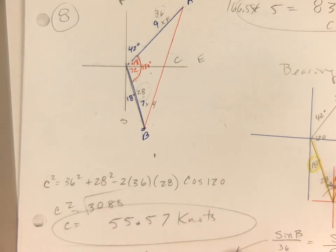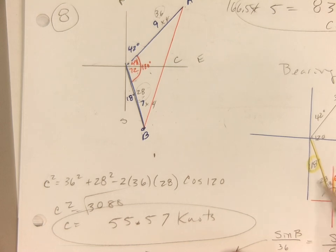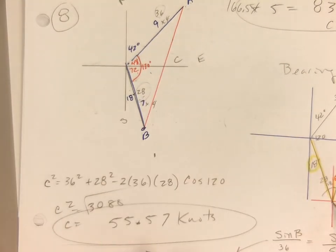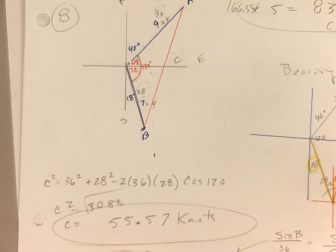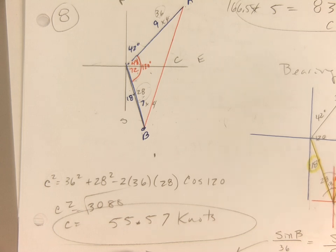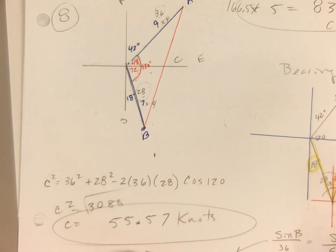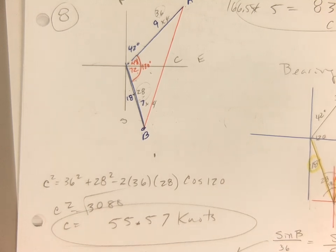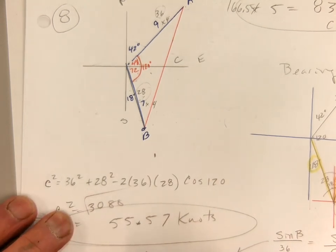To find the bearing, I placed the ship with its own north, east, south, west compass. Using the law of sines — sine of B over 36 equals sine of 120 over 55.57 — I found angle B to be 34.1 degrees. Since the two north-south lines are parallel, I subtract the 18 degrees from B, giving about 16.1 degrees. So the bearing is north 16.1 degrees east.